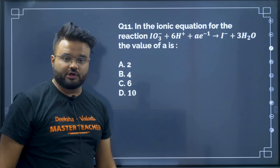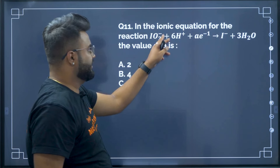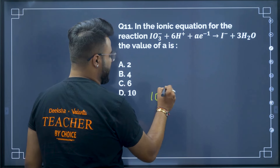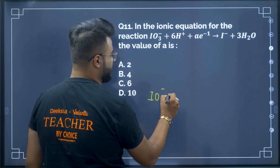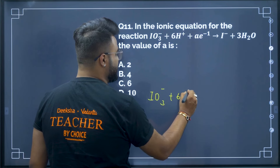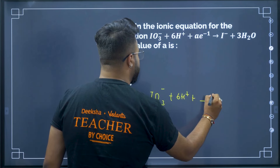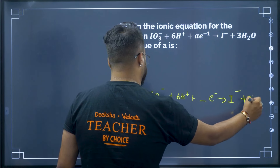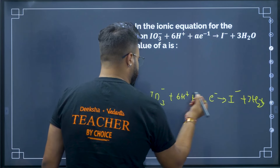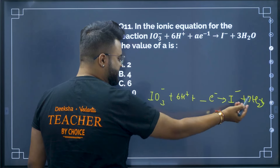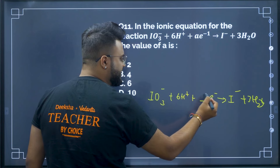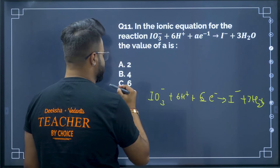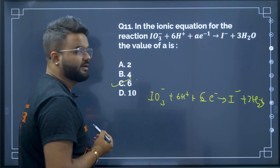Question 11: In the ionic equation IO₃⁻ + 6H⁺ + ? electrons → I⁻ + 3H₂O. All species are balanced but we need to find how many electrons are gained. When you balance the equation, you get 6 electrons. Therefore option C is your correct answer.